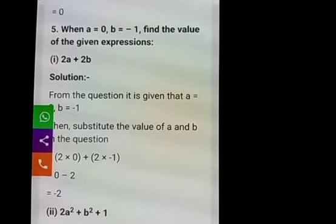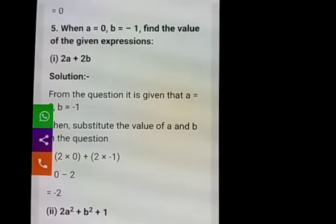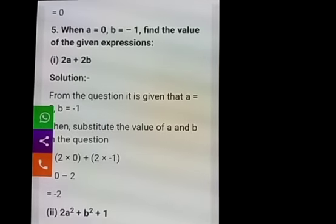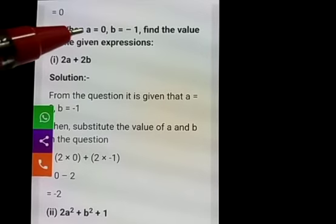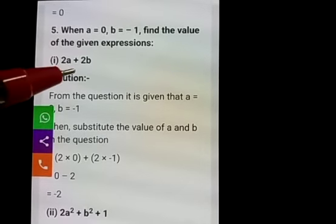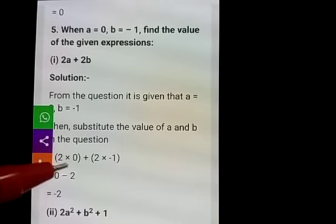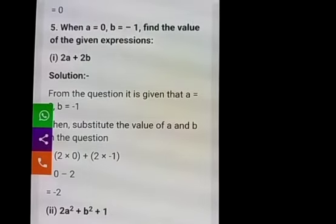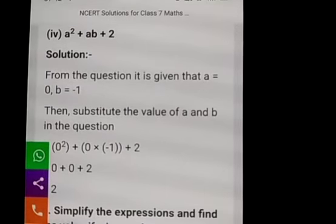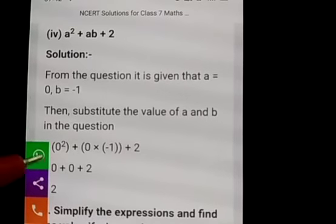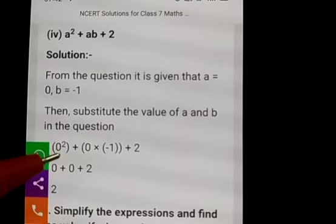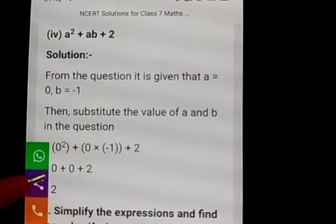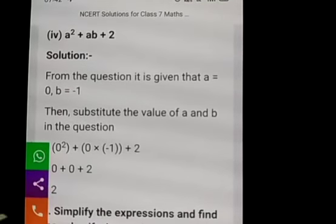Fifth main: when a is equal to 0, b is equal to minus 1, find the value of the given expressions. There are two variables; we have to write and substitute them. For 2a plus 2b: 2 into 0 plus 2 into minus 1. 2 into 0 is 0; plus into minus is minus, 2 ones are 2; so 0 minus 2 gives you minus 2. For the fourth question, a squared plus ab plus 2: substituting a as 0 and b as minus 1 gives 0 plus 0 into minus 1 plus 2. Any number multiplied by 0 is 0, so the answer is 2.